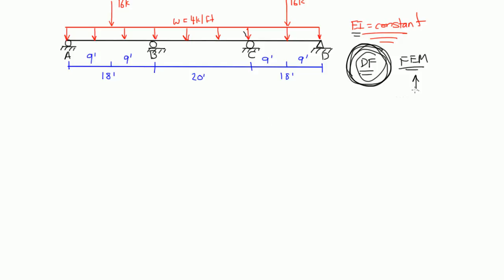Welcome back. In the last video we figured out the fixed end moments for each of the spans A, B, B, C, and C, D. Now we're going to work on the distribution factors for joints B and C. Remember, our distribution factor is the K value of the side of the span you're looking at over the summation of the K values for the spans that the joint is touching.